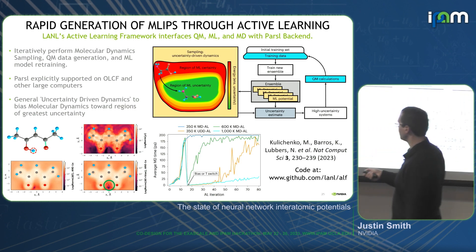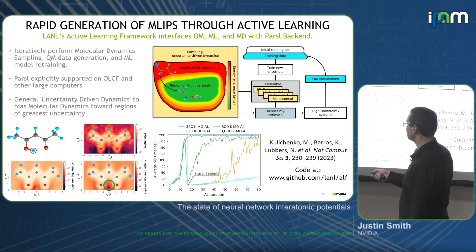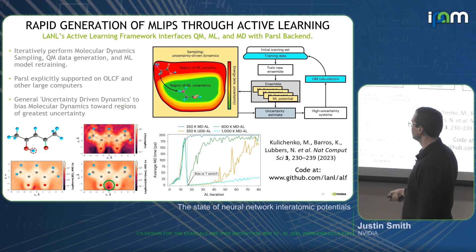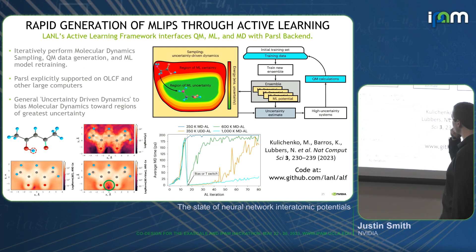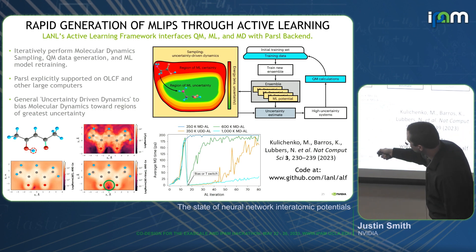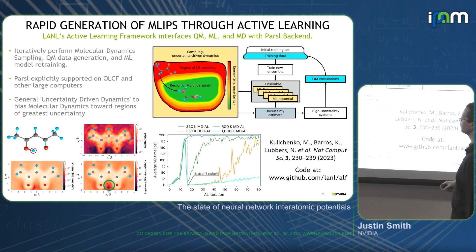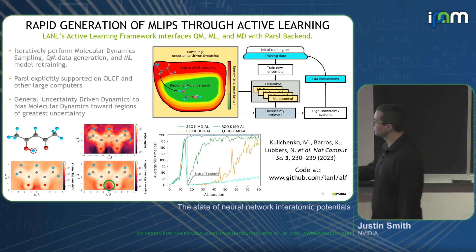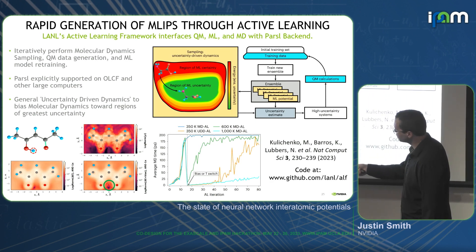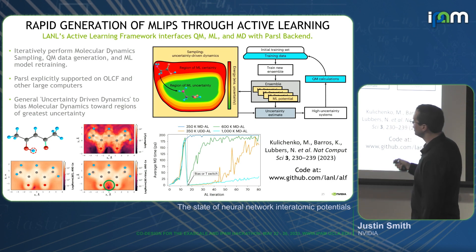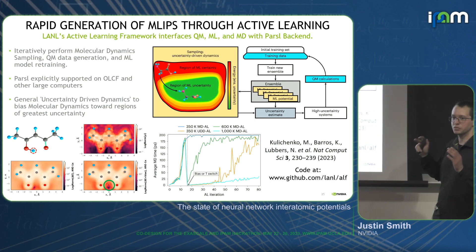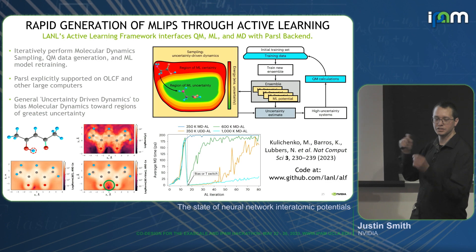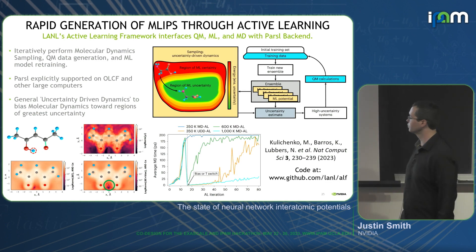This is a really cool example where we show that you're able to force the system to sample the reaction of moving a hydrogen between oxygens. There's a plot showing the distance between this hydrogen and this oxygen versus the other oxygen. At 350 Kelvin it never jumps, but as soon as you turn on that uncertainty bias, it's bouncing back and forth between them. It's really, really neat.